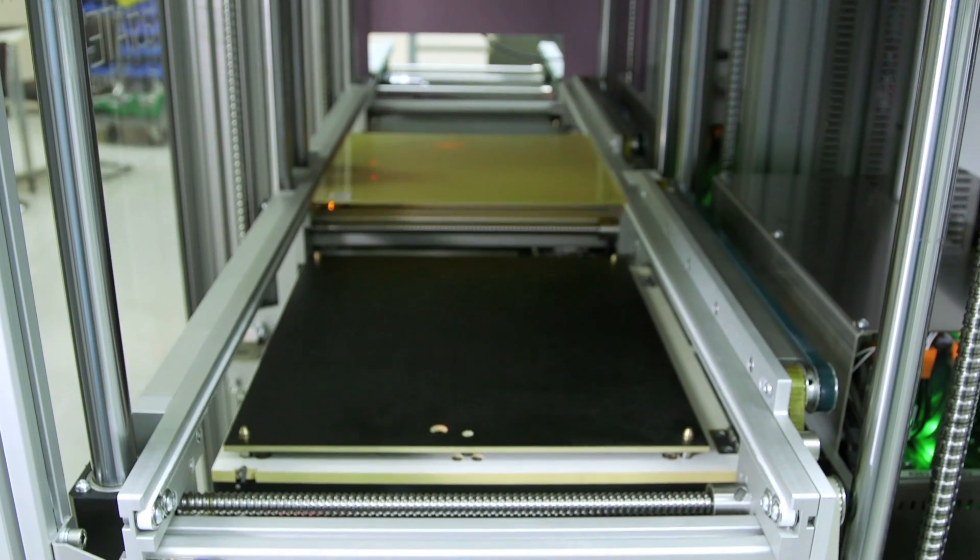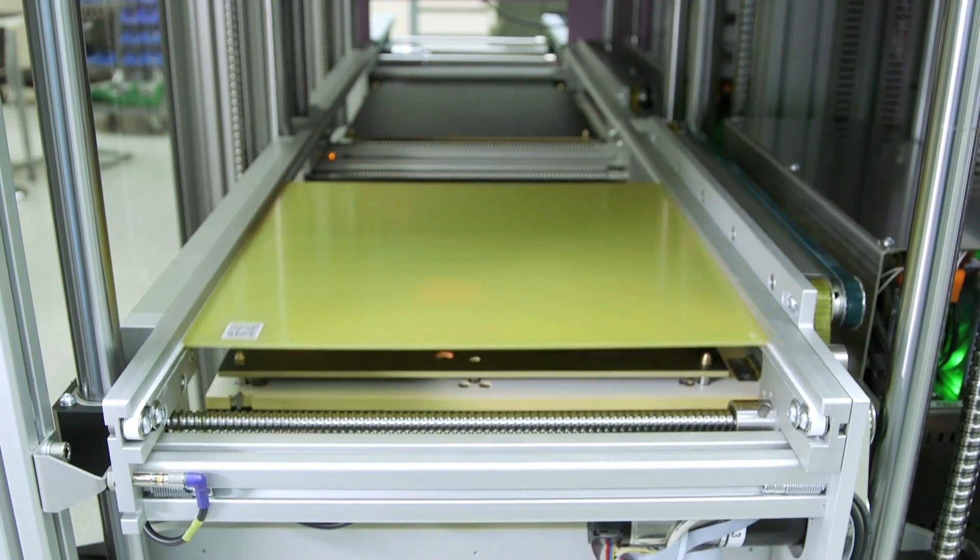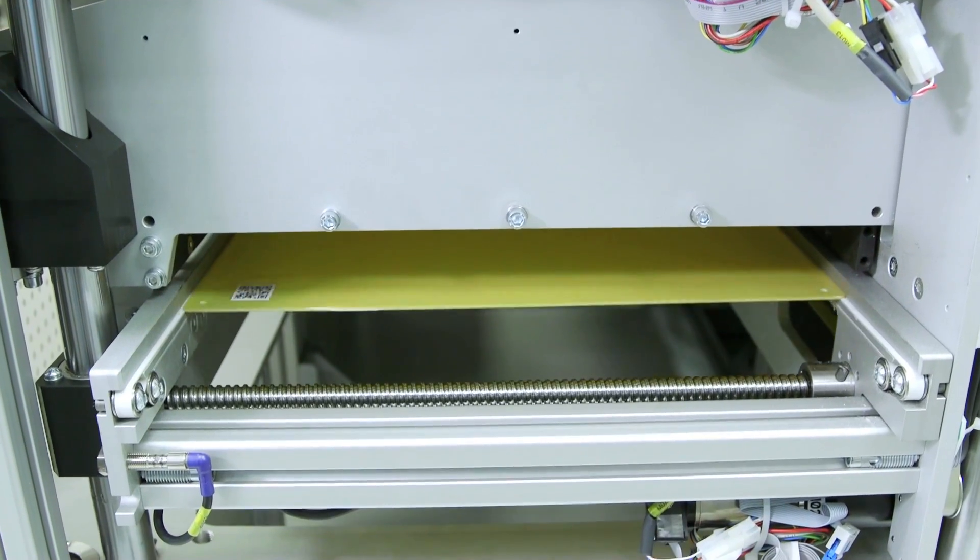A double conveyor system will enable the units under test to bypass a test handler, optimizing cycle time.